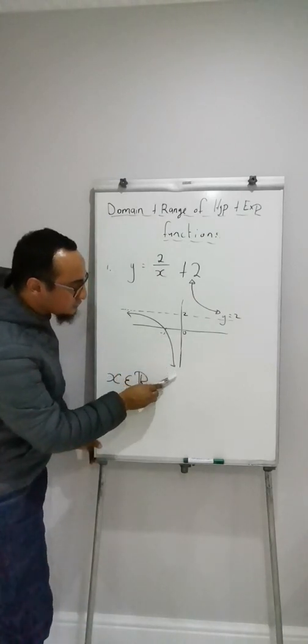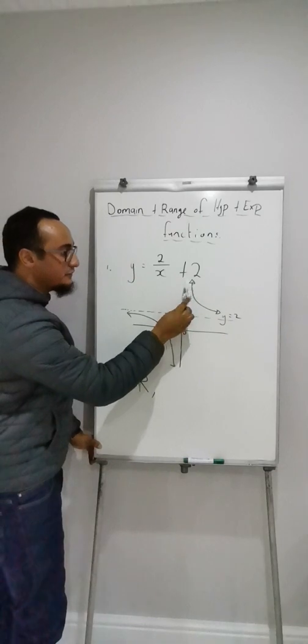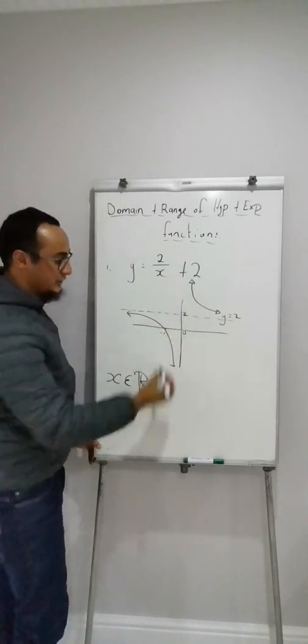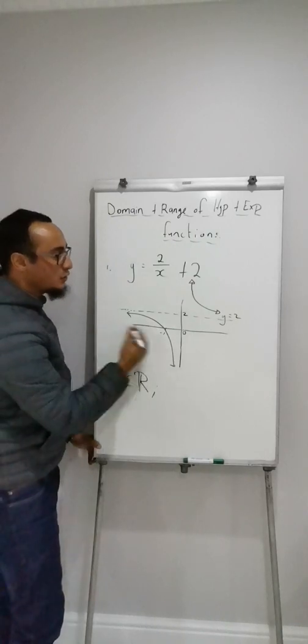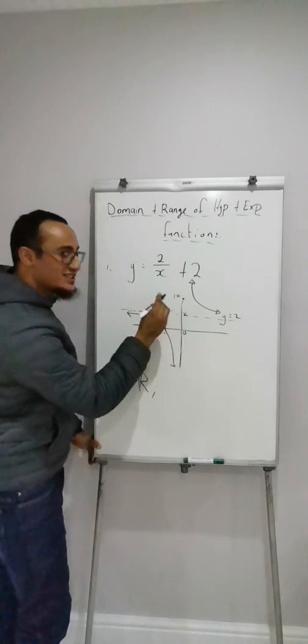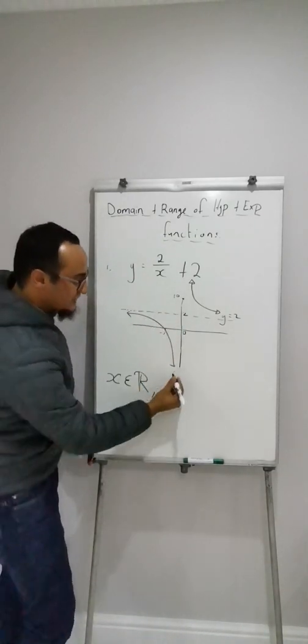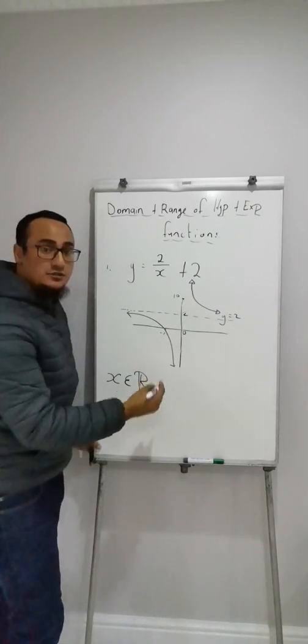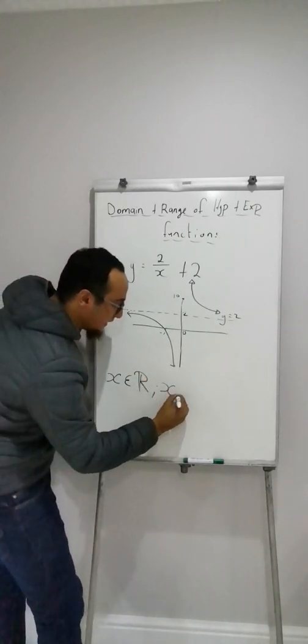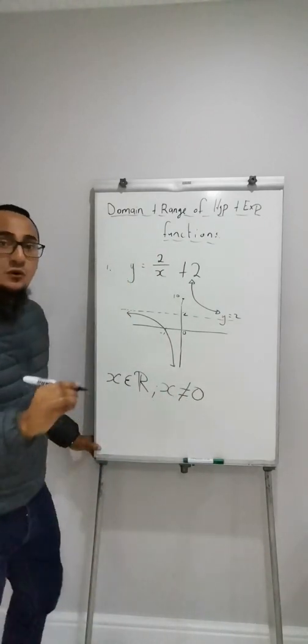No matter how far I go down over here, or up, my graph will never ever touch my y-axis over there. What's the value of that y-axis? If this is, for example, positive 10, the actual point is 0 and 10. If it's negative 100, it will be 0 and negative 100, which means my graph is never ever going to touch where x would be equal to 0. That is my restriction.